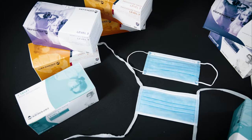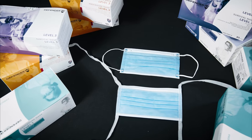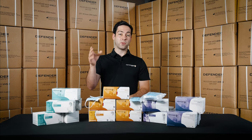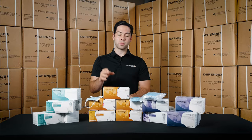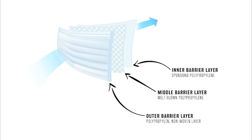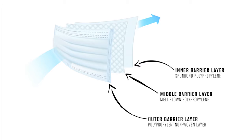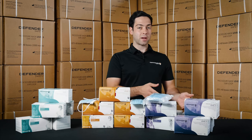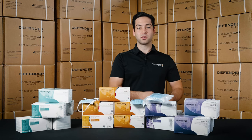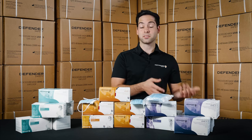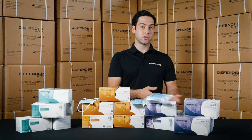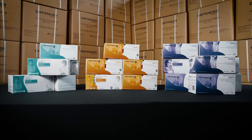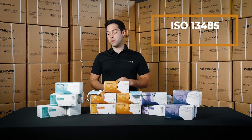Part of the construction you need to understand is the three-ply versus four-ply design. In a three-ply design there's an outer layer of spunbond, a melt-blown filter layer, and an inner layer of spunbond. With the four-ply we add one more spunbond outer layer, which enhances the liquid barrier and slightly enhances filtration — but we are not adding any additional filter layers.